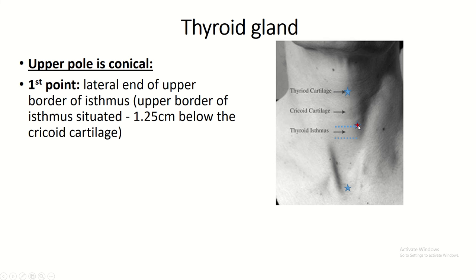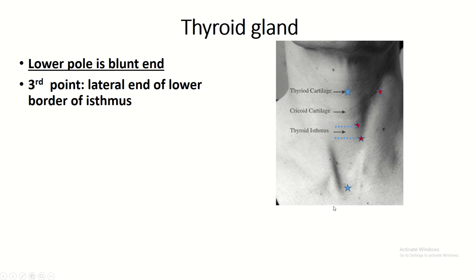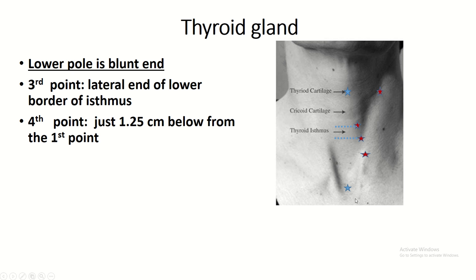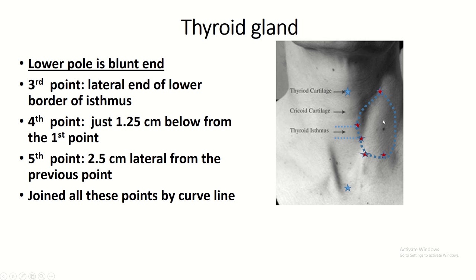For the upper pole of the lobe: the first point is the lateral end of the upper border of the isthmus. The second point is the anterior margin of the sternocleidomastoid muscle at the level of the laryngeal prominence. The third point is the lateral end of the lower border of the isthmus. The fourth point is 1.25 cm from the third point. The fifth point is 2.5 cm lateral from the fourth point. Join these points with a curved line to outline the lobe of the thyroid gland. This is the isthmus of the thyroid gland.